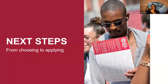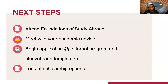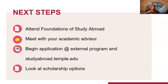Now we'll look at some next steps and how to get started. First, if you haven't already, please attend Foundations of Study Abroad — our required information session for all students who plan to study abroad. It covers how to apply for scholarships and different program options. If you've already attended Foundations, meet with your academic advisor to discuss which courses can apply towards your degree. Once you've confirmed with your academic advisor, start your application on the external programs website — you'll also apply on our website as a formal request to study abroad, and then apply directly to that program for the admissions decision.